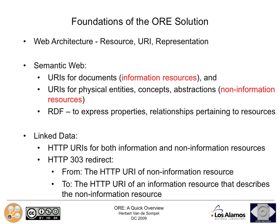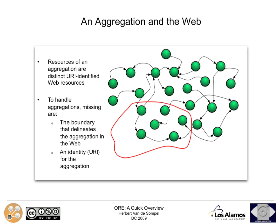Let's presume this is the web with its interlinked resources, and that for one reason or another these resources belong together. There are really two things that are missing in order to deal with resources that belong together. First, an identity for the union of these resources — there is nothing one can do on the web without a URI. And second, some kind of boundary that delineates which resources are part of the aggregation and which are not.